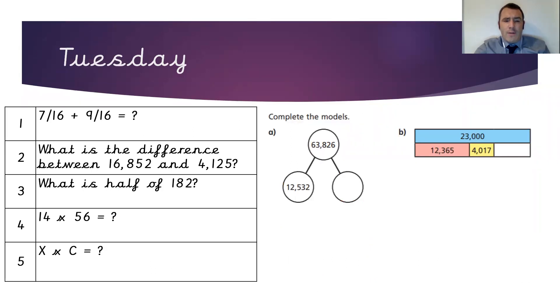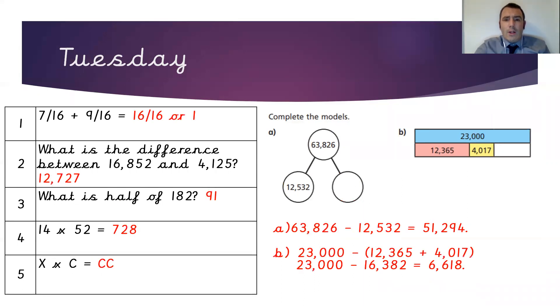Here are Tuesday's questions, Year 5. Pause the video here. Looking at the models for our reasoning question today, we've got a part-whole model for part A. To work out what needs to go in the missing circle, we need to subtract 12,532 from 63,826. That gives us 51,294. We can check our answer by adding 51,294 and 12,532 and making sure we get 63,826.